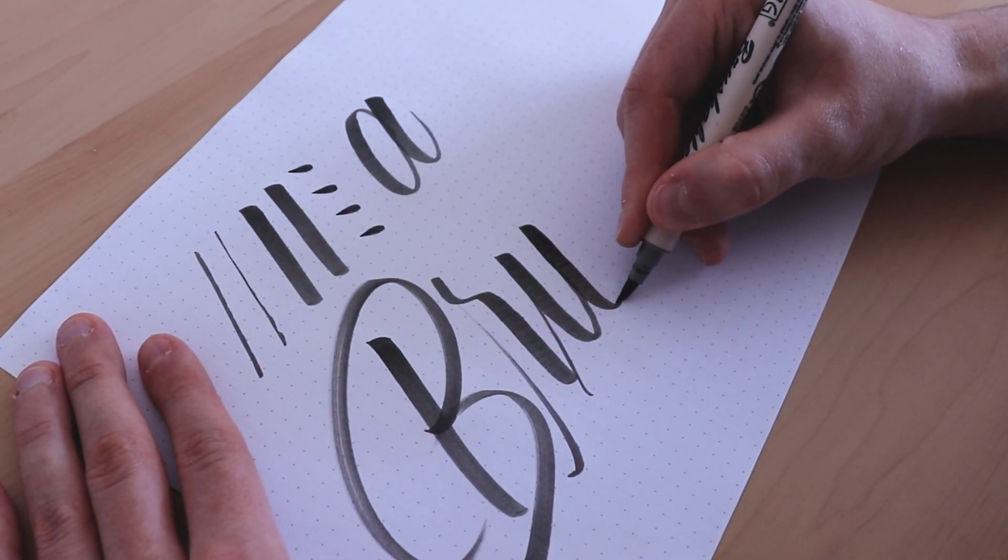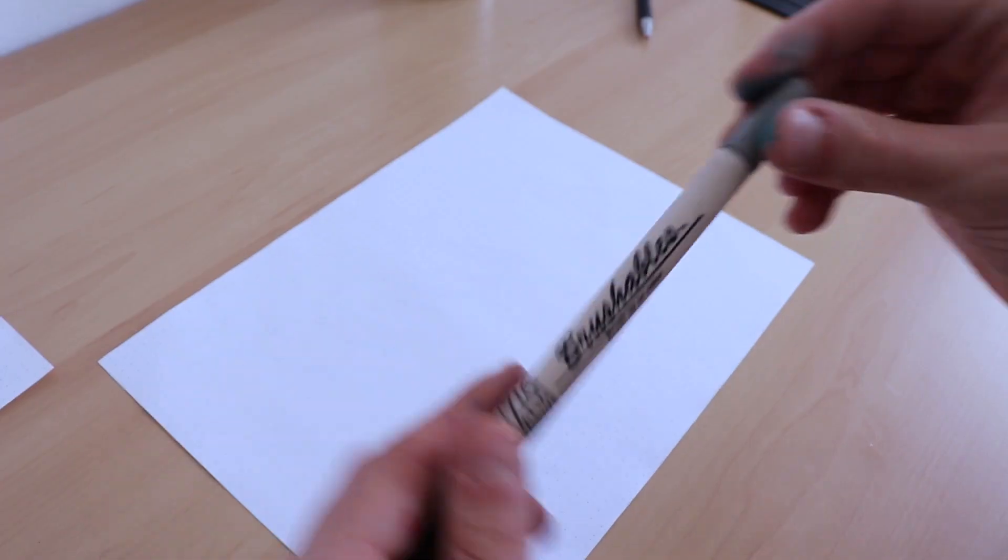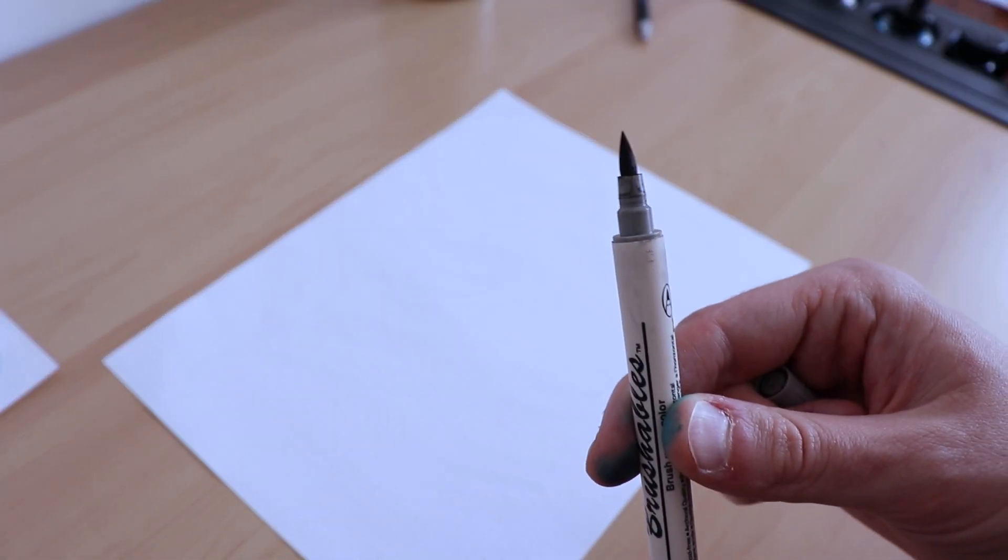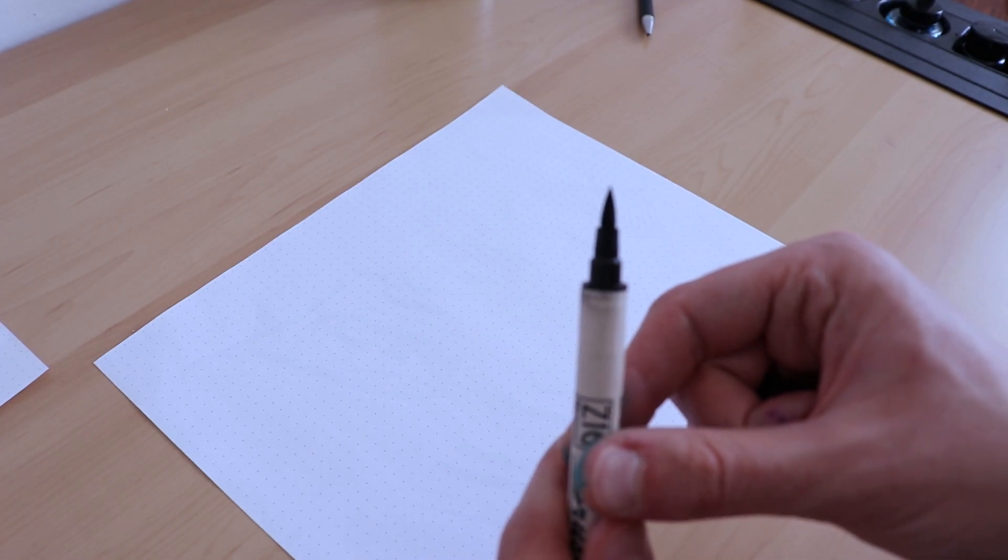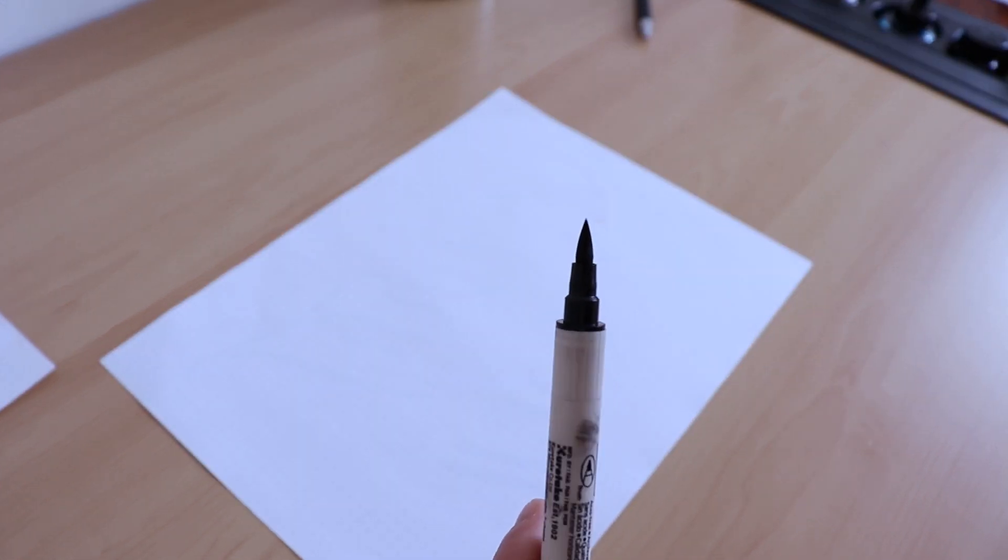The Zig Kuretake Brushable features a dual brush tip meaning that on each side there is an equally sized brush tip. Also the two sides are in different colors. So for example the pen I have is black but the other tip comes in a gray color. In total there are 12 different pens but each one of them has two colors hence the 24 colors available.